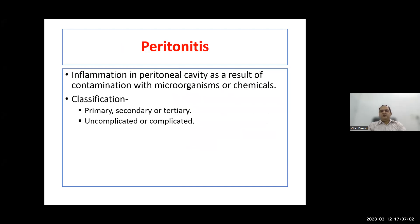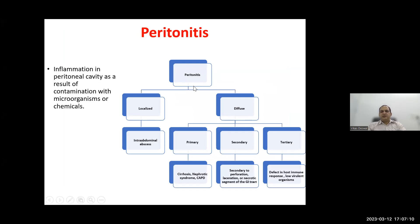Peritonitis is inflammation in the peritoneal cavity due to contamination with microorganisms or chemicals. It can be localized — presenting as intra-abdominal abscess — or diffuse. Diffuse peritonitis is subdivided into primary, secondary, and tertiary. Primary is seen in cirrhosis, nephrotic syndrome, and CAPD dialysis patients, with no structural or anatomical defect — hence called spontaneous bacterial peritonitis.